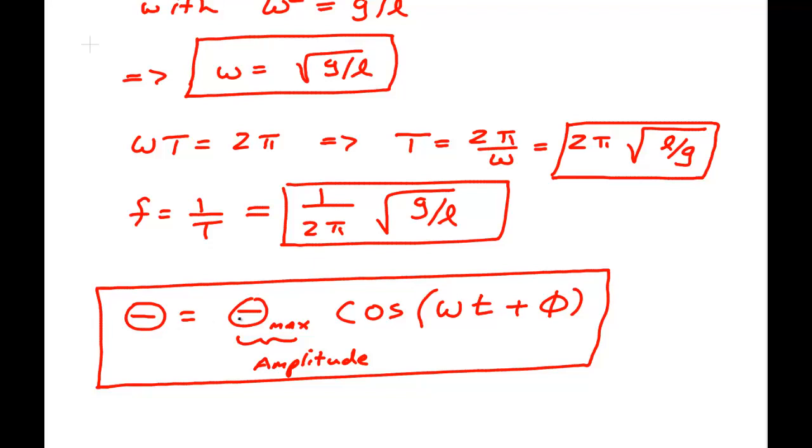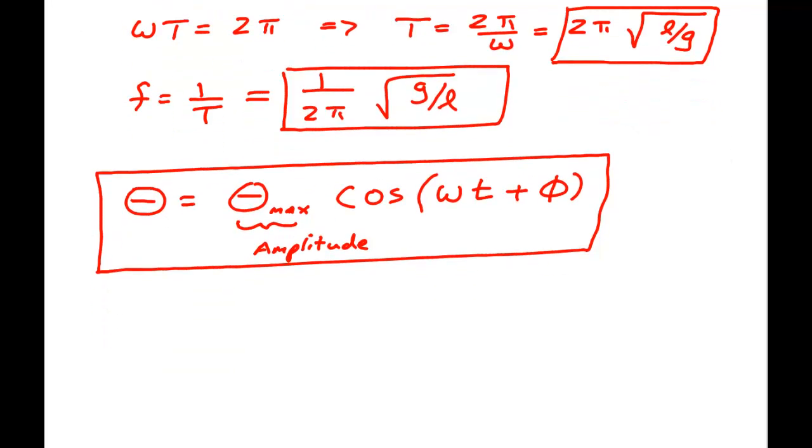These are the position of the bob. This is how it changes with time. They're not the same thing as these thetas. They're not the same thing as this.